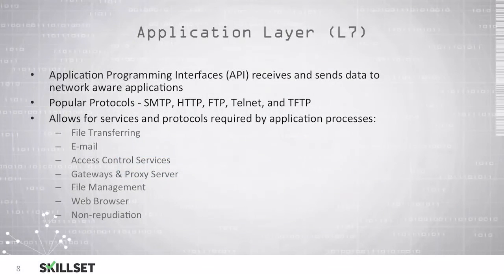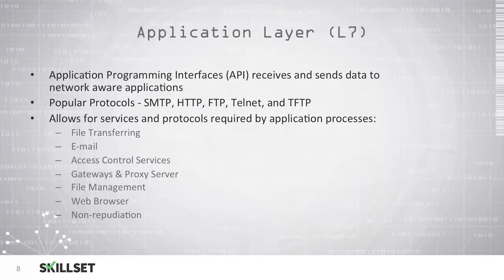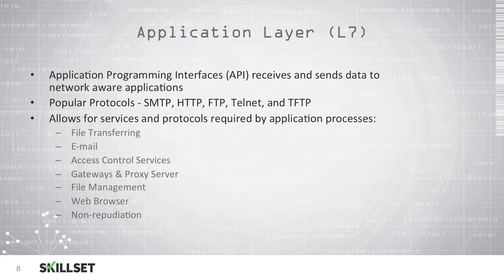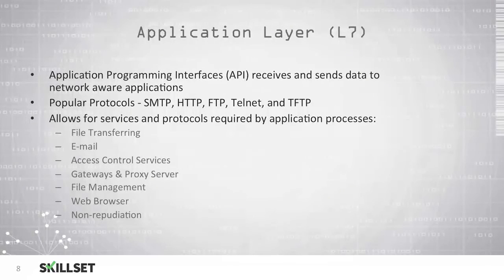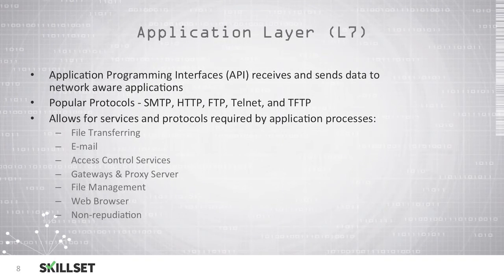The application layer, or layer 7, is where we have application programming interfaces, or APIs, that are able to send and receive data to network-aware applications. There are many popular protocols at this layer including SMTP used for transferring email messages, HTTP for transferring websites, FTP and TFTP which are used for transferring files, and Telnet which is used for remote connections and control of devices.